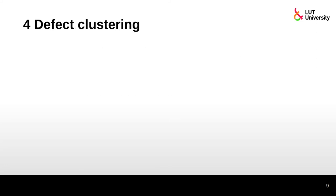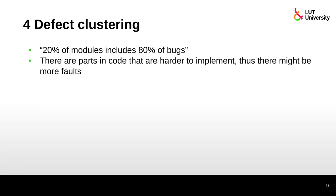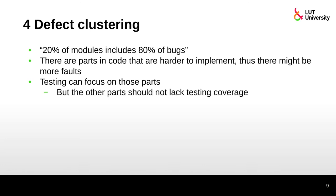Fourth principle: defect clustering. There is a saying that 20 percent of modules contain 80 percent of bugs — some parts of code are harder to implement and therefore more fault-prone. Testing can focus on those areas with clusters of defects, but that does not mean other parts should be excluded from testing. Everything should be tested, but you can prioritize the parts most likely to contain more bugs.